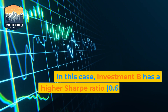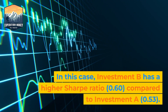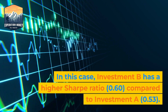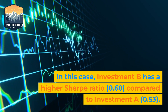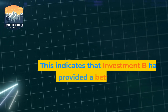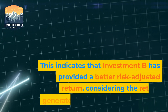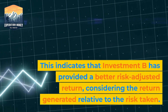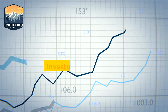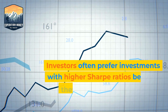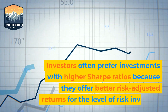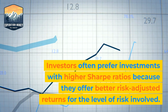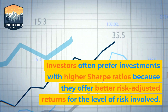In this case, Investment B has a higher Sharpe Ratio of 0.60, compared to Investment A's 0.53. This indicates that Investment B has provided a better risk-adjusted return, considering the return generated relative to the risk taken. Investors often prefer investments with higher Sharpe Ratios because they offer better risk-adjusted returns for the level of risk involved.